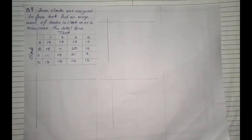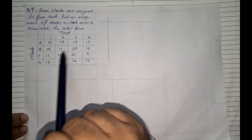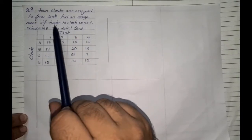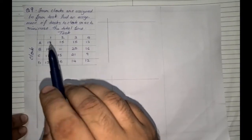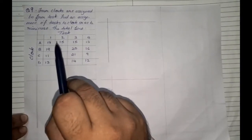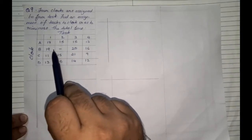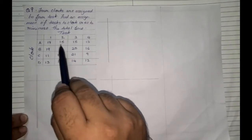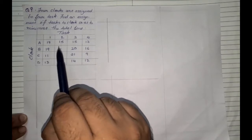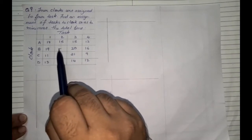The question reads: 4 clerks are assigned to 4 tasks, so it is a balanced problem. Find an assignment of tasks to clerks so as to minimize the total — it is a minimization sum. If you look carefully at the task table, there is one value which has nil, meaning there is one prohibited value. There is no value allotted to that particular box, so that is called a prohibited sum.